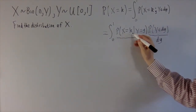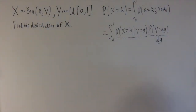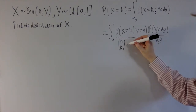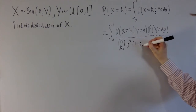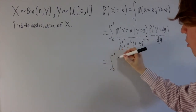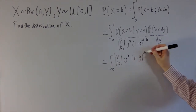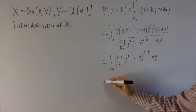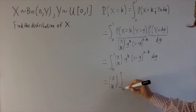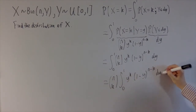The probability x equals k given y equals y: well, if y equals the small y, then x is binomial with parameters n trials and y as the probability of success. So this gives you n choose k, and then the probability of success is y, so you get y to the k times 1 minus y to the n minus k. That gives us the integral from 0 to 1 of n choose k times y to the k times 1 minus y to the n minus k, dy. I can take out the n choose k since it doesn't depend on y, and I'm left with the integral of y to the k times 1 minus y to the n minus k.